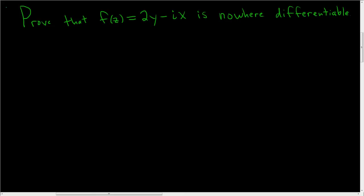We're asked to show that a function is nowhere differentiable, so the natural thing to try first is to check the Cauchy-Riemann equations. If they do not hold, then we're done, and the function is nowhere differentiable.